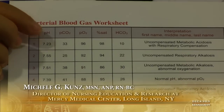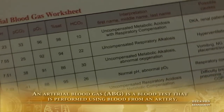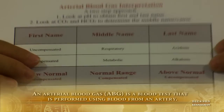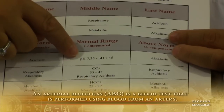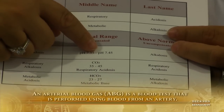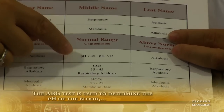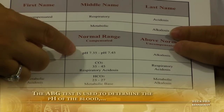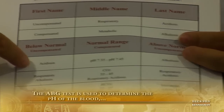The first thing I look at is the pH — 7.23. If I go to the other side of my chart and look at the pH and decide which side it's on: is it between 7.35 and 7.45? No, it is on the lower side. It is lower than normal, and a low pH leads us to an acidosis condition.